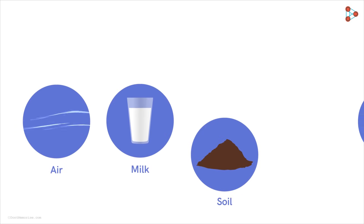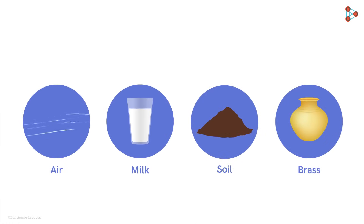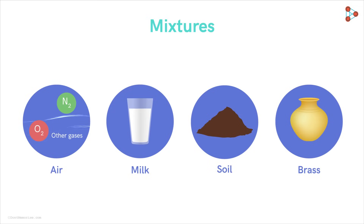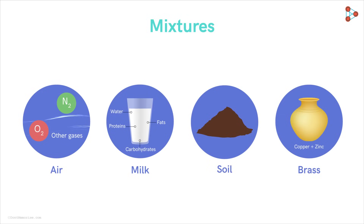What do air, milk, soil, and brass have in common? They are all mixtures. Air is a mixture of nitrogen, oxygen, and many other gases. Milk is a mixture of water, fats, proteins like casein, and carbohydrates like lactose. Similarly, soil is a mixture of many things, and brass is an alloy of copper and zinc. Most of the substances we come across in daily life are mixtures of two or more pure substances.